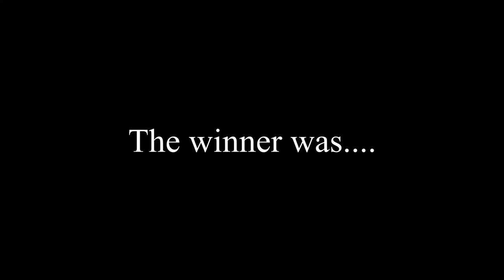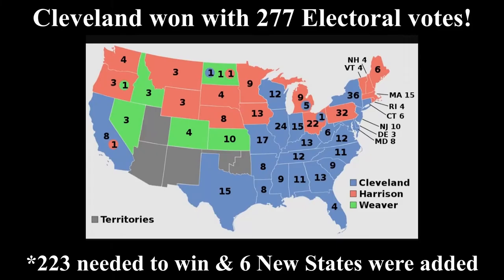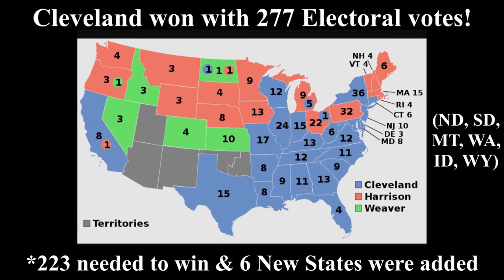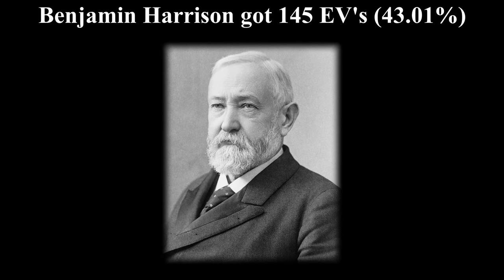The winner was Grover Cleveland, becoming the 24th president in American history and the first president to win a non-consecutive second term. Cleveland won with 277 electoral votes and 46.02% of the popular vote. Adlai Stevenson became the 23rd Vice President. Benjamin Harrison got 145 electoral votes with 43.01% of the vote, and James Weaver won a stunning 22 electoral votes and 8.51% in this election.